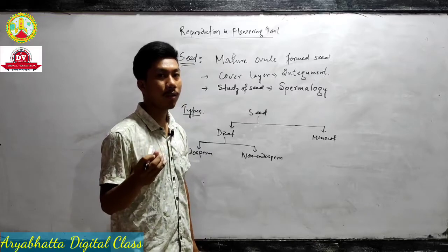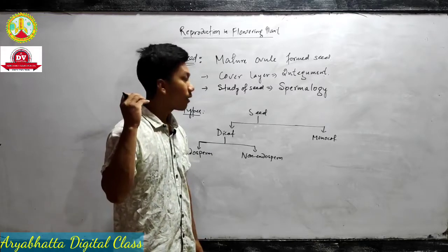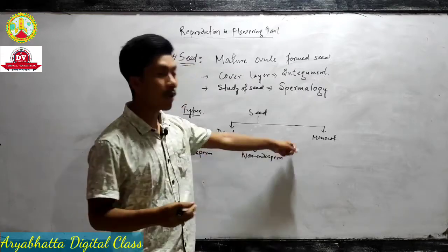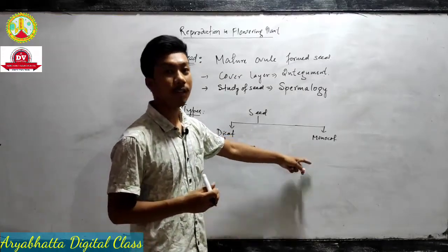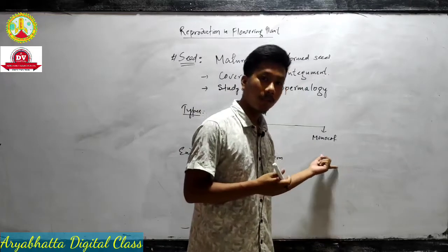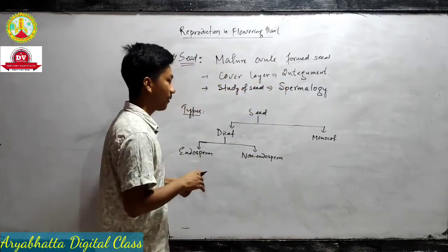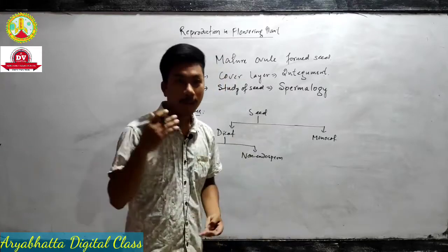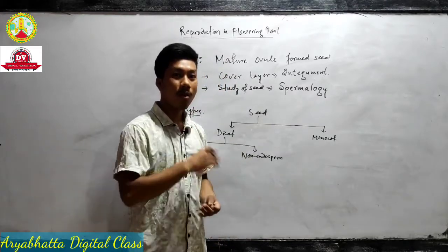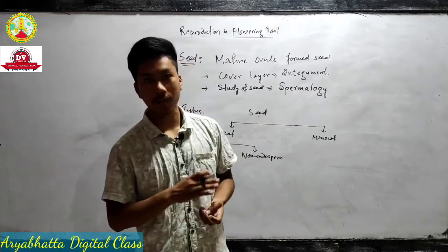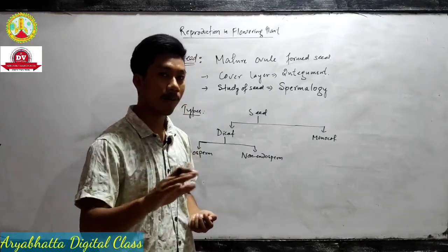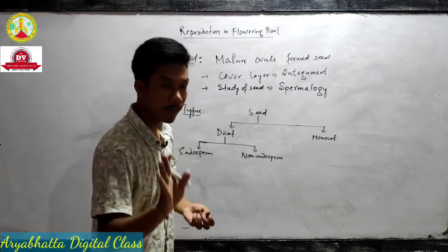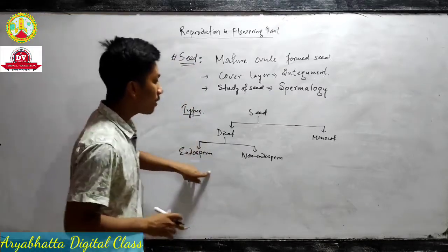Same for monocot also — if after the formation of embryo the endosperm is still there, we call it an endospermic monocot seed. A very common example is coconut. If after the formation of embryo the endosperm is utilized and there is no endosperm found, then we call it a non-endospermic monocot seed.